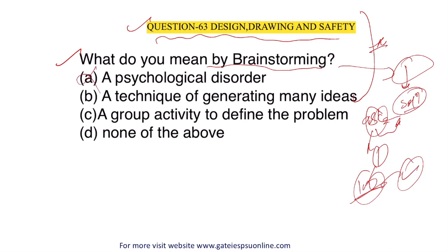Option A — a psychological disorder — no. Option B — a technique for generating many ideas — yes, this is correct. Option C — a group activity to define the problem — no. Brainstorming is about finding the best solution for a problem by gathering ideas from different people or communities, and the board of directors or higher authorities select the best idea. So option B is the correct answer.